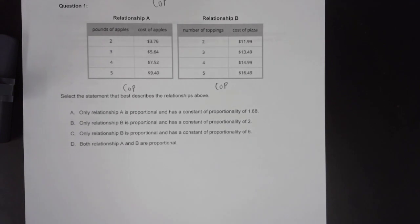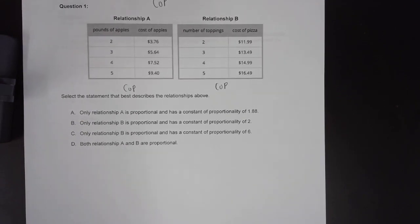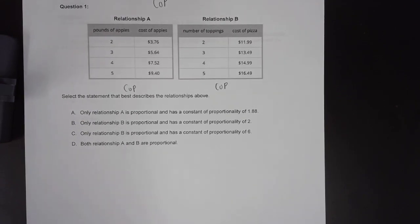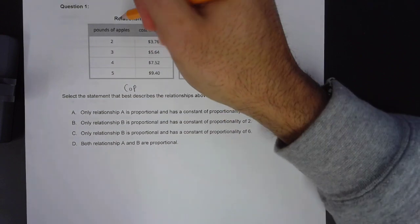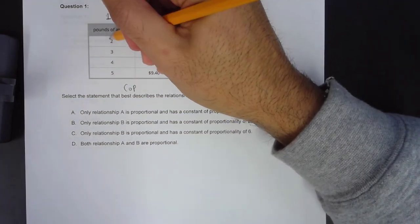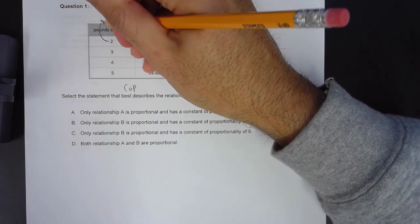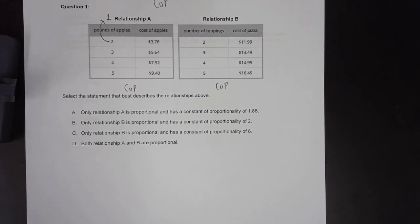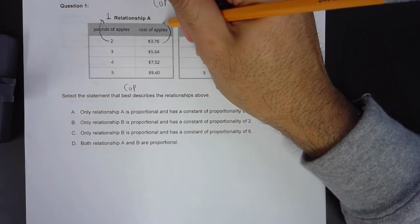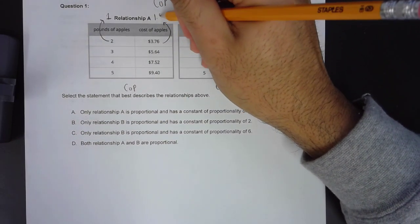We'll start off with relationship A. In relationship A, the table says that for 2 pounds of apples, the cost of apples would be $3.76. It goes on to tell us the price for 3 pounds, 4 pounds, and 5 pounds of apples. The easiest way that I recommend is trying to find the unit rate on this table. In other words, finding what 1 pound of apples would be equal to. If I divide both sides by 2, I would get to $1.88.